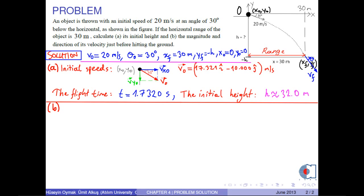In part b, we find the x and y components of the final velocity. x component of the final velocity is found by this formula. Since the acceleration in the x direction is 0, then we have vxf equals vx0. That is, 17.321 meters per second.